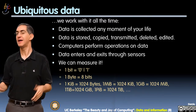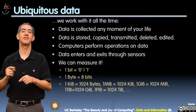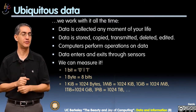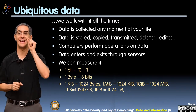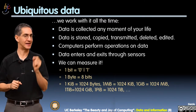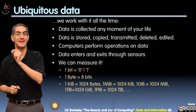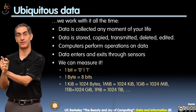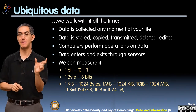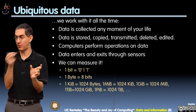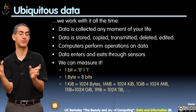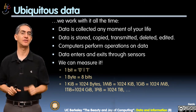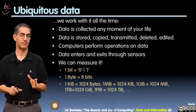Let's get bigger now. If I have 1,024 of those — that's 2 to the 10th — that's called a kibibyte, not a kilobyte. A kilobyte is 1,000. A kibibyte is 1,024, which is 2 to the 10th. 1,000 is 10 to the 3rd; a kibibyte is 2 to the 10th.